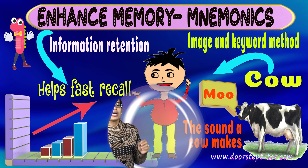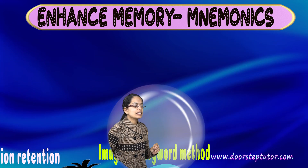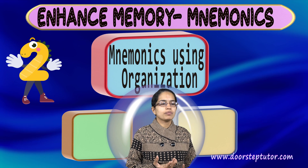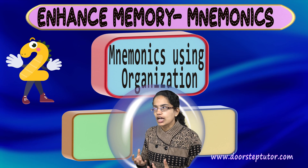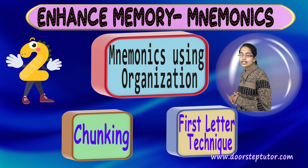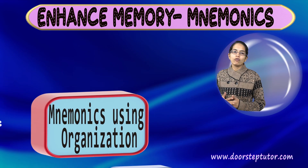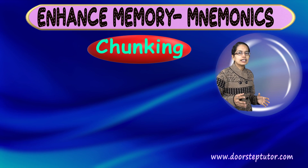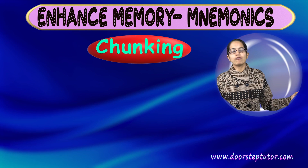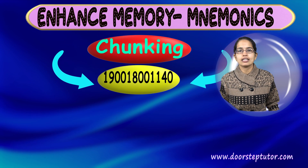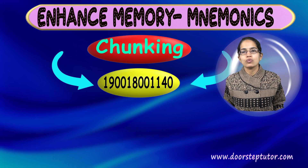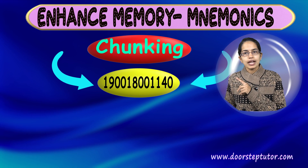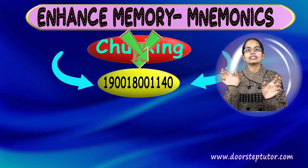The next category is methods for organization, which can be in the form of chunking or the first letter technique. Chunking implies grouping items together — for example, a number like 1-9-0-0-1-8-0-0-1-1-4-0 can be broken into smaller groups.